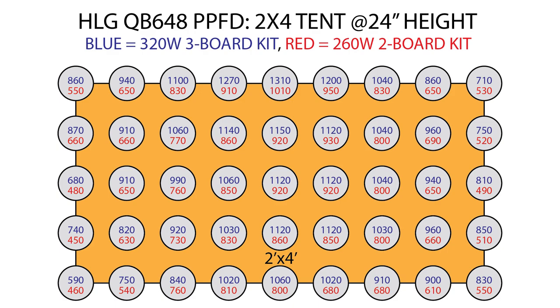The first test I'll share is a hanging height of 25 inches from the light to the floor, which works out to be about 24 inches from light to sensor since the sensor is about an inch tall. The 320 watt kit numbers are in blue, and the 260 watt kit numbers are red, and you can see straight away that the big kit is really blasting this space with an average of about 965 micromoles per meter squared per second over all 45 measurement points.